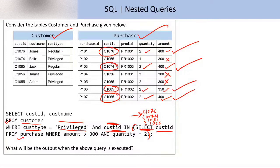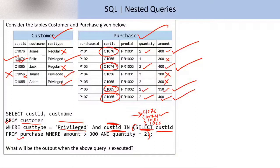Checking each row of the customer table: first row — customer type is not privileged, so not selected. Second row — customer type is privileged and customer ID C1074 is in the inner query result, so this tuple is selected. Third row — customer type is privileged but customer ID C1056 is not in the result, so not selected. Fourth row — customer type is privileged but customer ID C1055 is not in the result, so not selected. Only one row from customer is selected.